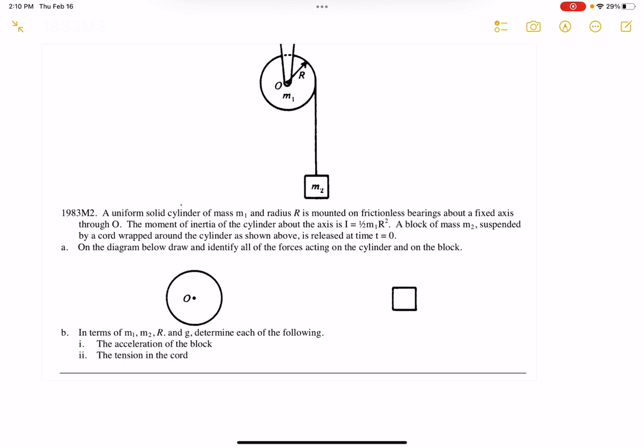So it says, a uniform solid cylinder of mass M1 and radius capital R is mounted on a frictionless bearing about a fixed axis through point O. The moment of inertia of the cylinder about the axis is I equals one-half M1 R squared. A block of mass M2 suspended by a cord wrapped around the cylinder as shown above is released at time T equals zero. On the diagram below, draw and identify all the forces acting on the cylinder and on the block.